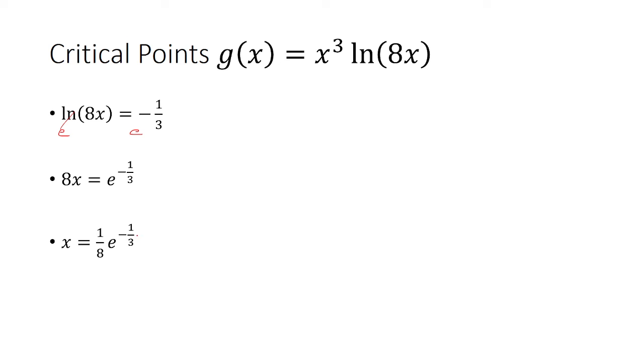So from the previous slide we had x = 0 being one of the critical points, but if you notice, if I plug in x = 0, we have ln(0) and ln(0) is undefined, so 0 is not part of the domain. The domain here is x > 0, so we have to throw away x = 0 as being the critical point. So we only have one critical point and that is going to be (1/8)e^(-1/3).